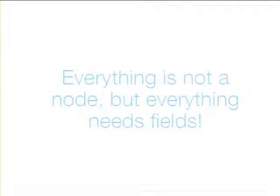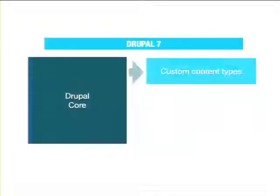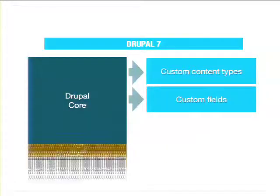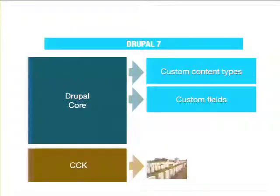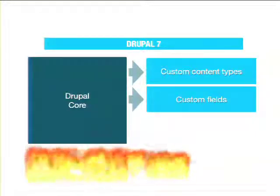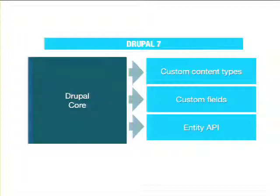We did lots of talking, and everybody said: it's not necessarily that everything needs to be a node, but everything should have fields. It would be really nice if we could put fields on anything — on users, on comments. Let's put fields on everything and put it in Core. So in Drupal 7, here we are: we've got custom content types, we've got custom fields, and CCK — bye-bye. The only thing we really need CCK for in Drupal 7 is to migrate the old D6 style stuff to Drupal 7.